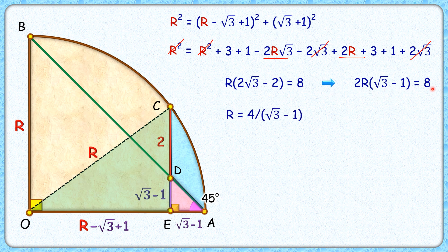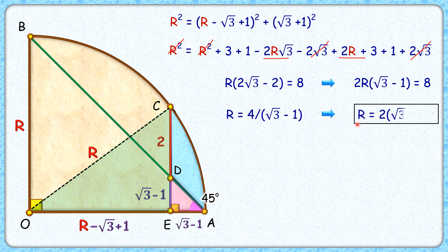This 2 will get canceled, so R is 4 upon root 3 minus 1. Simplifying it by rationalizing the denominator, we'll multiply numerator and denominator with root 3 plus 1. On simplifying, we'll get radius R as 2 times root 3 plus 1 centimeter.